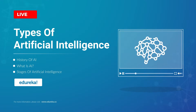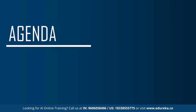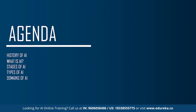Let me begin by discussing the agenda. We'll begin the session by understanding the history of artificial intelligence, then understand what exactly artificial intelligence is. After that, we'll discuss the different stages of AI and the different types of AI. We'll finally end by understanding the different branches or domains of artificial intelligence.